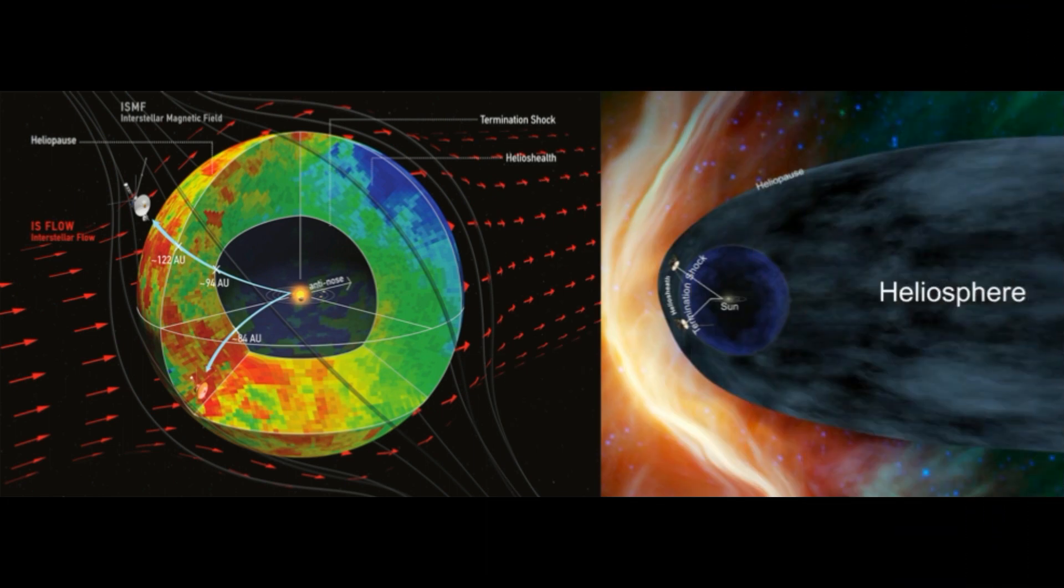The structure of the heliosphere plays a big role in how particles from interstellar space, called cosmic rays, reach the inner solar system, where Earth and the other planets are.